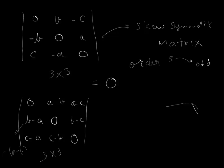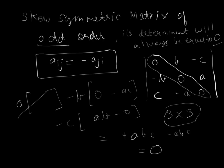So it satisfies the skew symmetric matrix property and therefore it is 0 because it is also a 3 by 3 matrix which means it is a skew symmetric matrix of order 3.